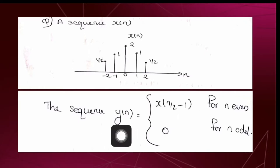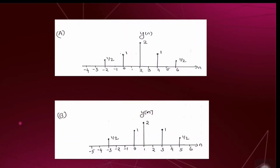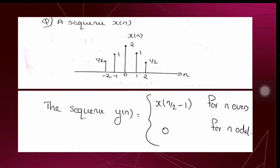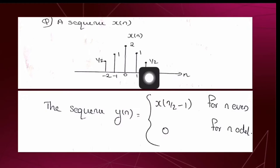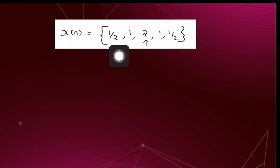First, what we are going to do is express x[n] in sequence representation. In sequence representation, a discrete time signal is expressed as a sequence of numbers within a pair of brackets. You can see x[n] is having non-zero values at five points: at n = −2 it is 1/2, at n = −1 it is 1, at n = 0 it is 2, at n = 1 it is 1, and at n = 2 it is 1/2. So we can write x[n] as {1/2, 1, 2, 1, 1/2}.